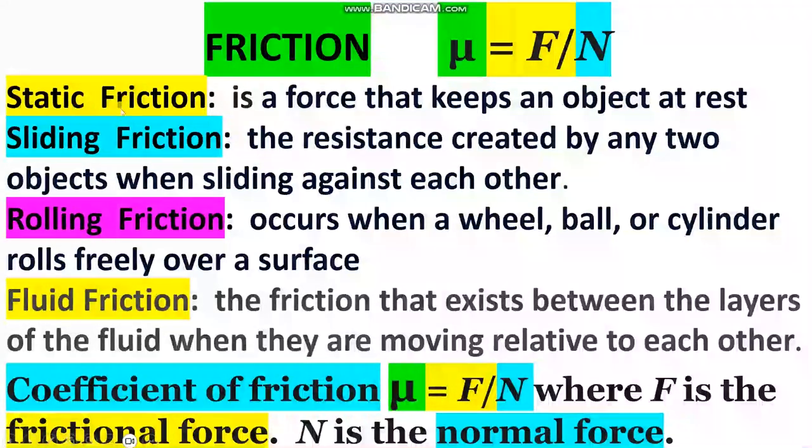There are some kinds of, or some types of friction. Static friction, sliding friction, rolling friction, fluid friction. Static friction, the force that keeps an object at rest. You make force, but the object can't move.